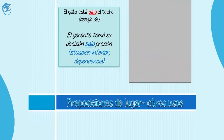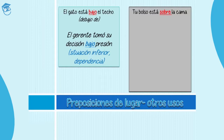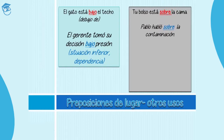Veamos otro ejemplo. Tu bolso está sobre la cama — your bag is on the bed. Sobre, we already know that it means on when something is placed on top of something. But if you use it in another context, with another intention, you will see that it can have different meanings. For example, Pablo habló sobre la contaminación — Pablo talked about the pollution. As you can see, sobre in this phrase can be used to talk about the theme or the topic the person is talking about.